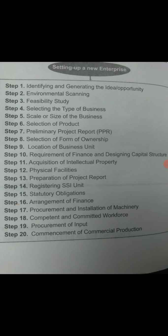The eighth step is selection of the form of ownership. Here we decide whether the business will be a sole proprietorship, partnership, or joint stock company. This depends on the amount of capital, the extent of liability involved, and the legal formalities required.